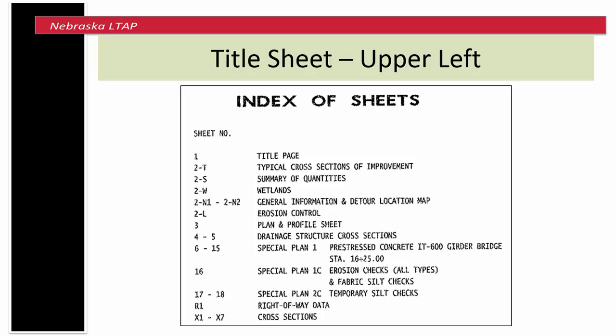In the upper left corner you will find the index of sheets. This is like the table of contents for the plan set. If you are asked to find a specific item on the plans, it may be easier to refer to this to find the sheet number.